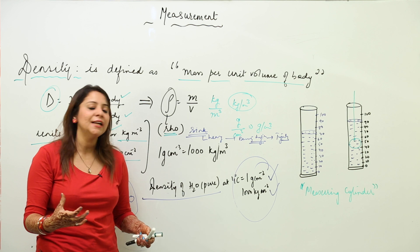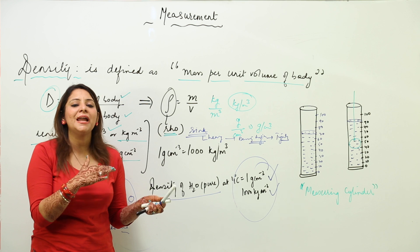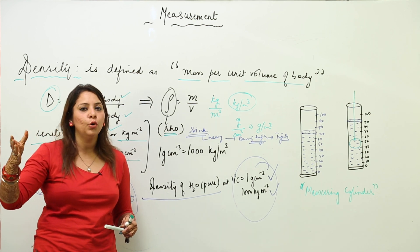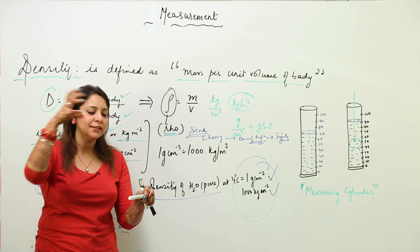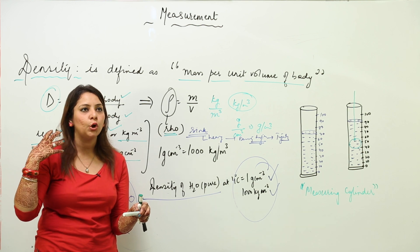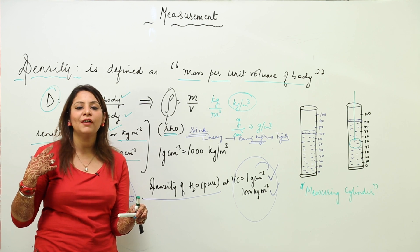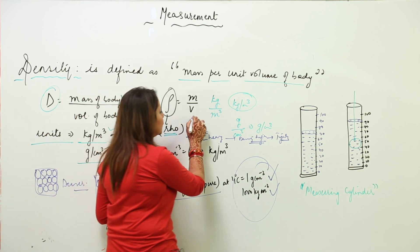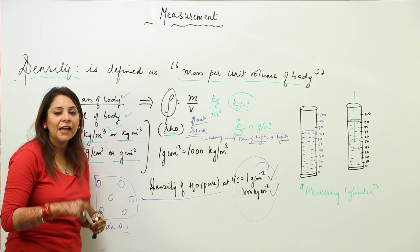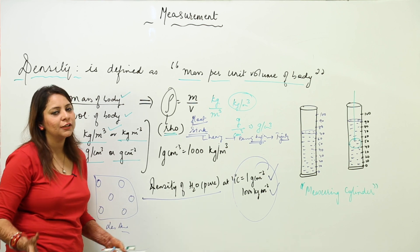Whether a substance sinks or floats depends upon the comparison of densities. If the substance you are adding has more density than the liquid, it is going to sink. The one which is less dense — in which the particles are not closely packed or which has lower density — is going to float. So floating or sinking is mainly decided by density, and density is decided by how tightly or loosely the particles are packed.